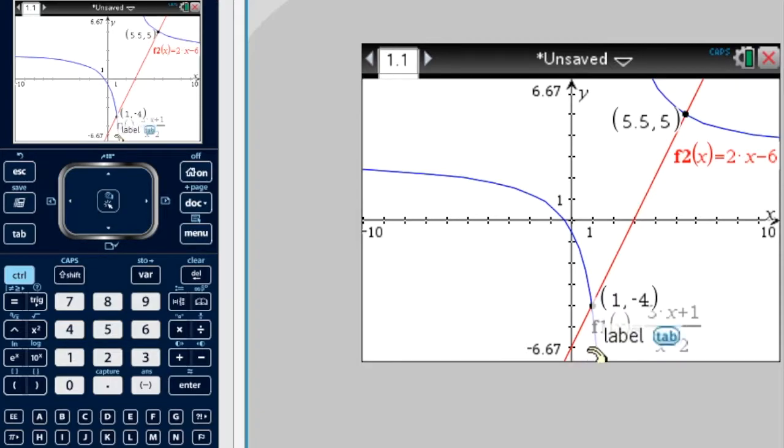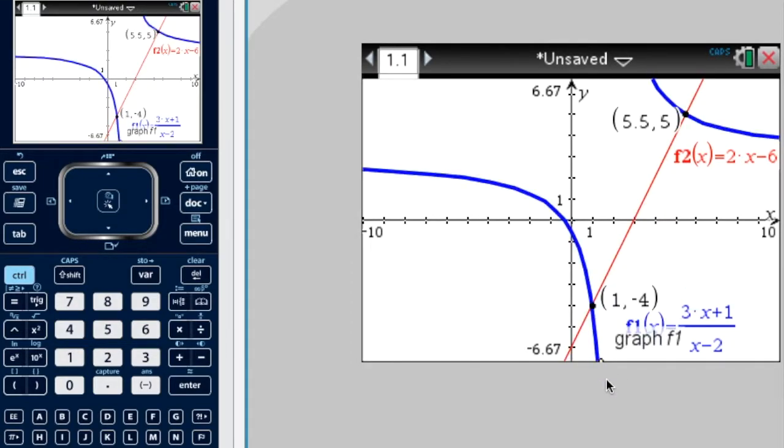But when x is bigger than 1 down here, down here, this part of the graph, so when x is bigger or equal to 1, the graph is less than or equal to the red one.